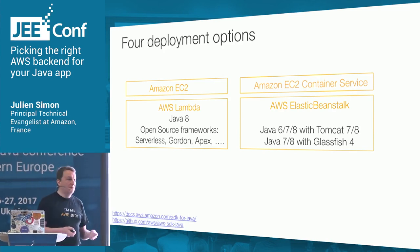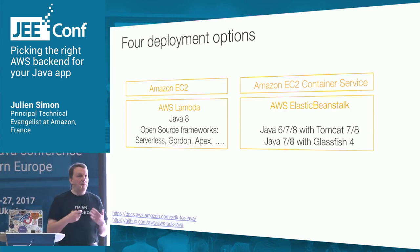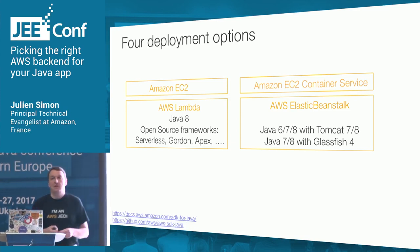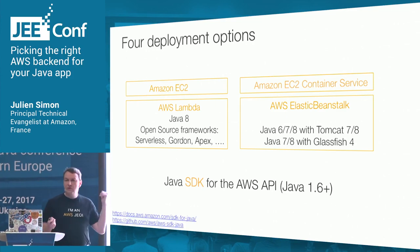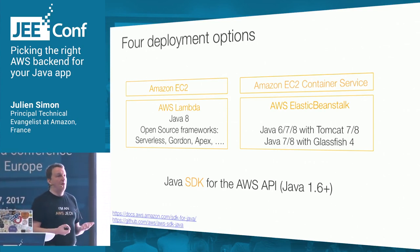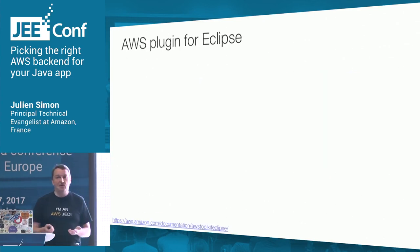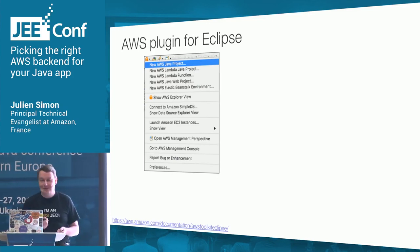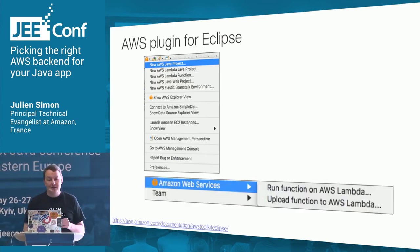Lambda is the so-called serverless architecture, where you don't care about infrastructure anymore. You just deploy code functions and trigger them using APIs or any kind of infrastructure event in your AWS account. You can do Java 8, and there are quite a few open source frameworks that make it easy to write, deploy, and manage Lambda functions.